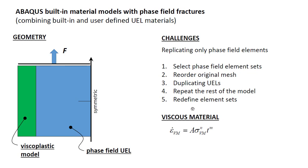We will use the following viscoplastic material model. However, we will assume that the strain rate has no dependence on time, just a linear one. Thus M is going to be equal to zero, and we will have the same material model as assumed commonly.